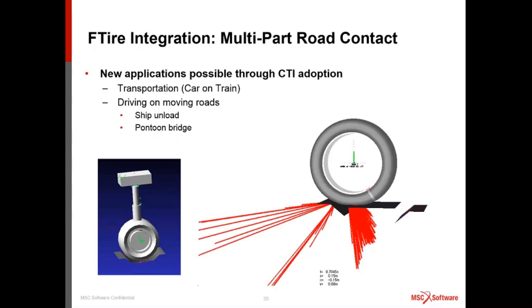Talking about multi-point or multi-road contact, this opens the door for applications like transporting vehicles on trucks or trains using clamping devices. Another application is better support for moving roads — such as unloading cars from a ship where you investigate the transition between road segments: the ship as one segment, the ramp as a second, and the ground as a third. Or driving over a pontoon bridge where each segment is its own road definition, requiring one tire with multiple roads.